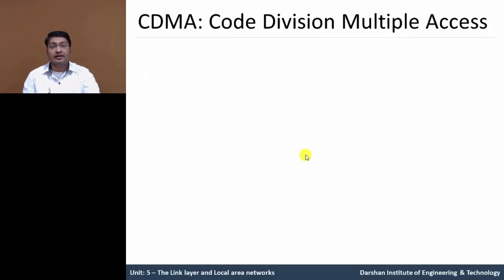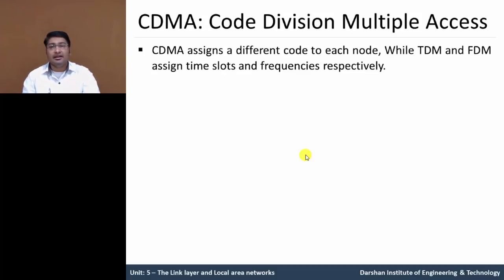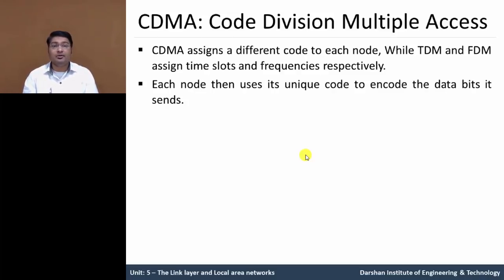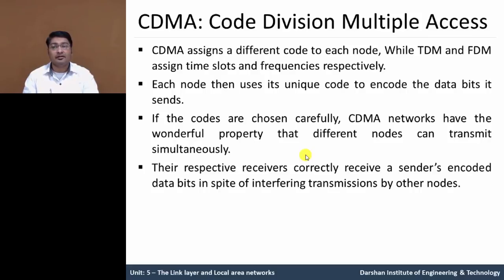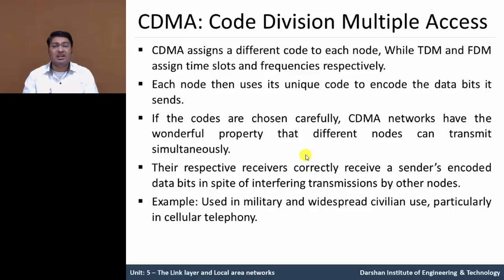Let us discuss another technique: CDMA, Code Division Multiple Access. CDMA assigns a different code to each node, whereas TDMA and FDMA assign time slots and frequency bands respectively. Each node uses its unique code to encode the data to be sent. If these codes are chosen carefully, CDMA networks have the wonderful property that different nodes can transmit simultaneously and there is no collision. Their respective receivers correctly receive the sender's encoded data frame in spite of interfering transmissions by other nodes, so no collision situations occur.